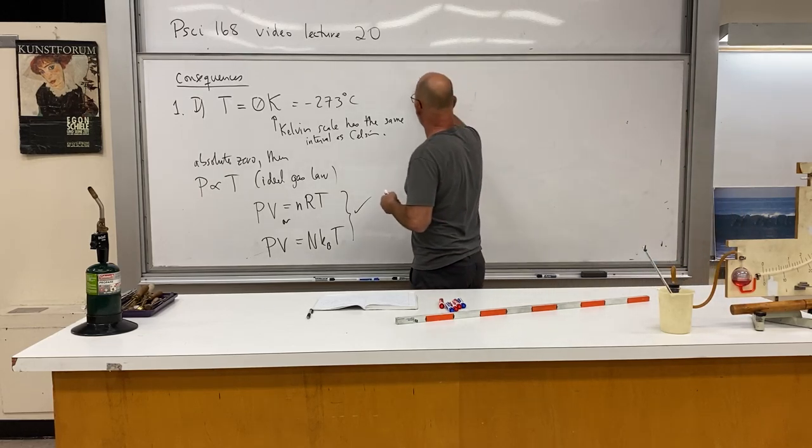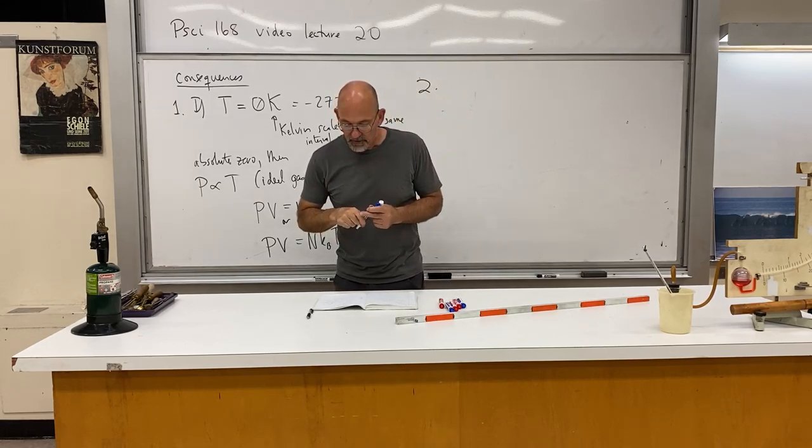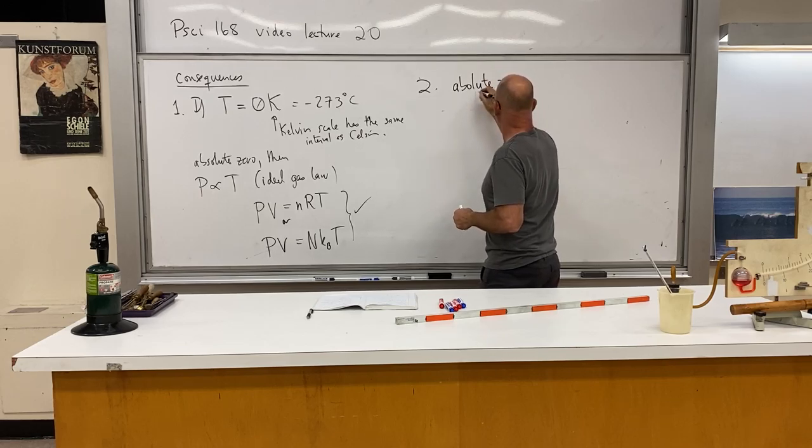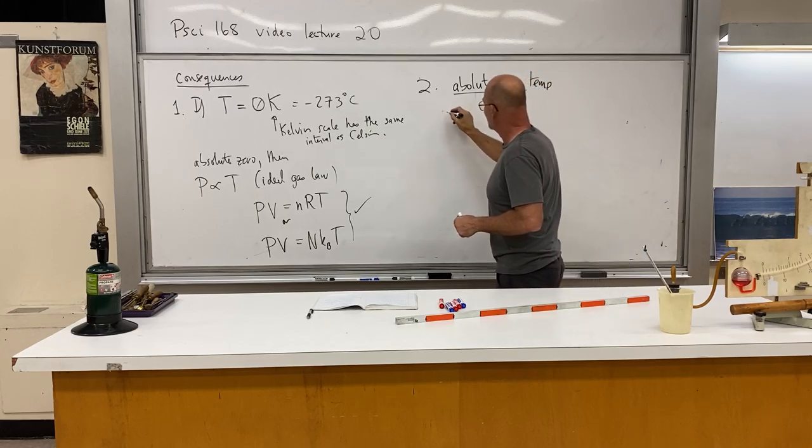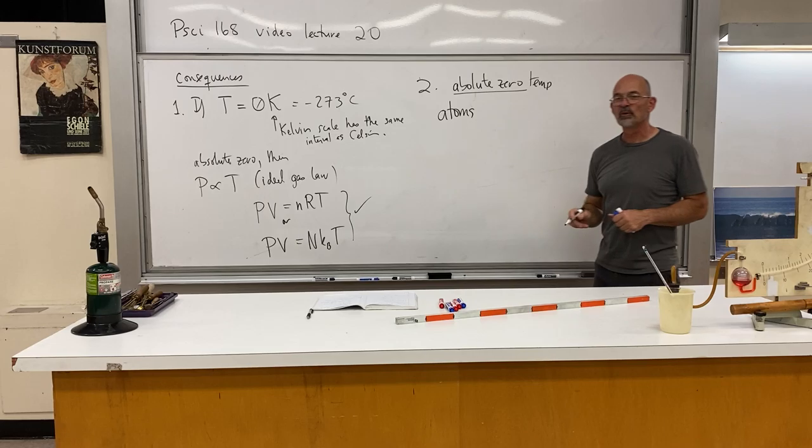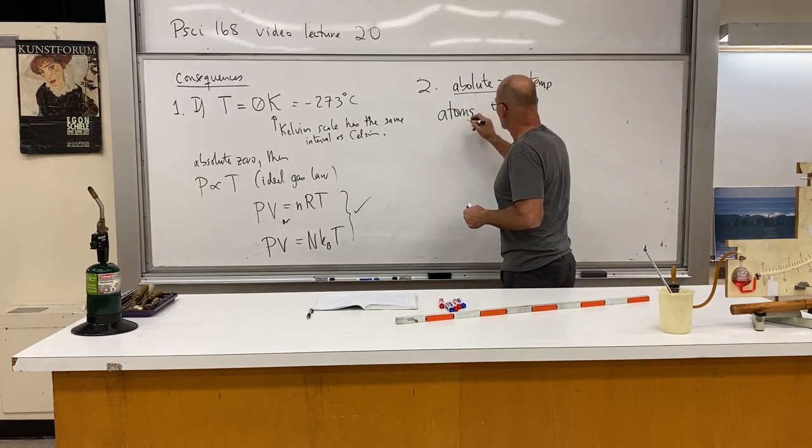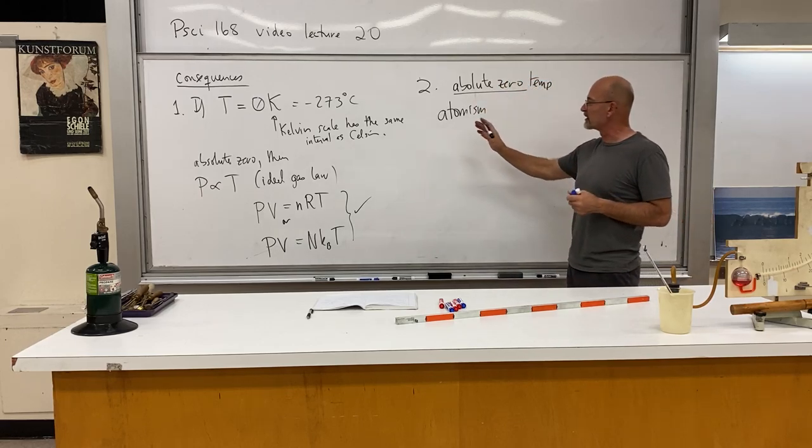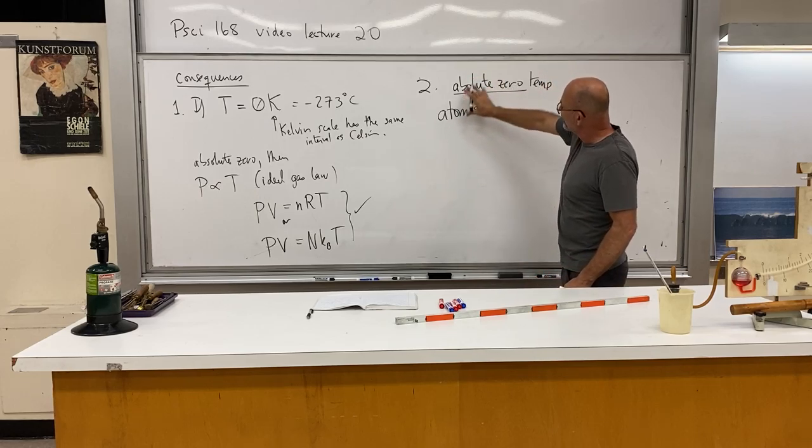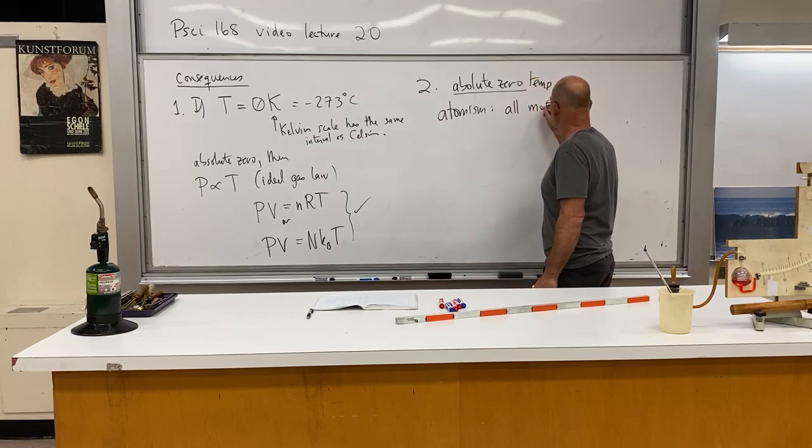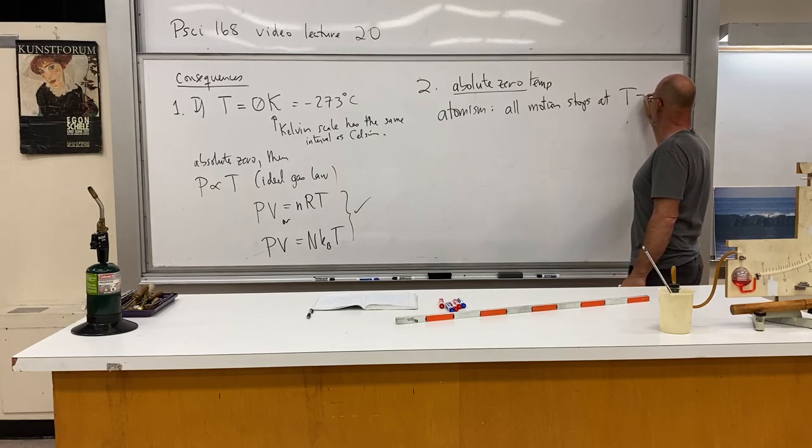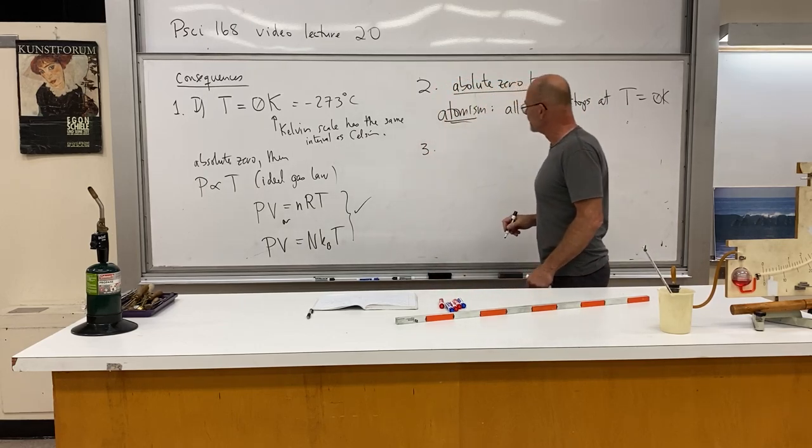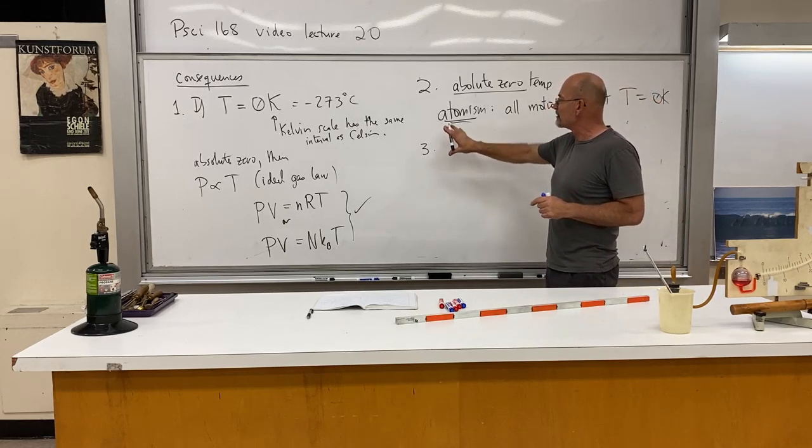And we're going to be using the Kelvin scale in the course of the semester. So the next one assumes what we call atomism. So we're going to assume the molecular nature of matter. So this absolute zero temperature, if you have the idea of atoms, and it's important that we know that matter is composed of atoms and molecules. So atomism, that's the theory, philosophy that matter is composed of atoms.